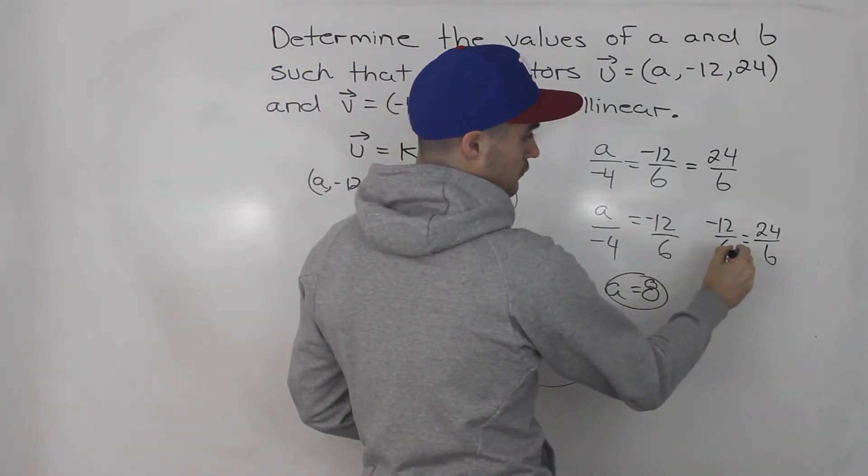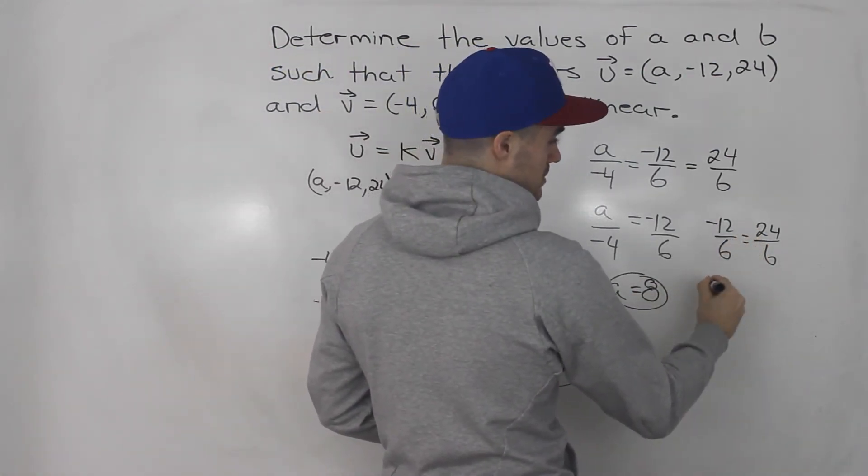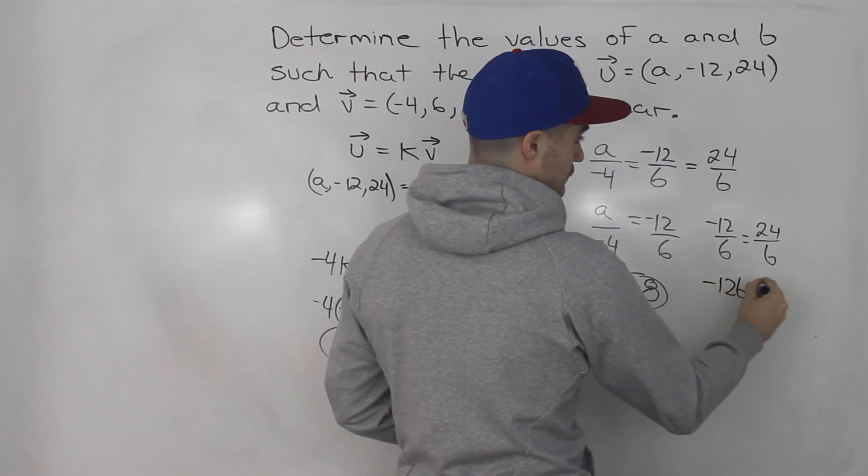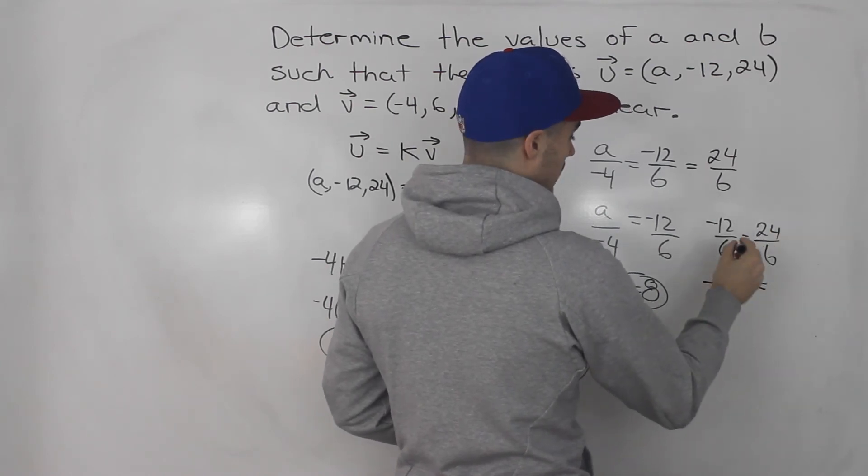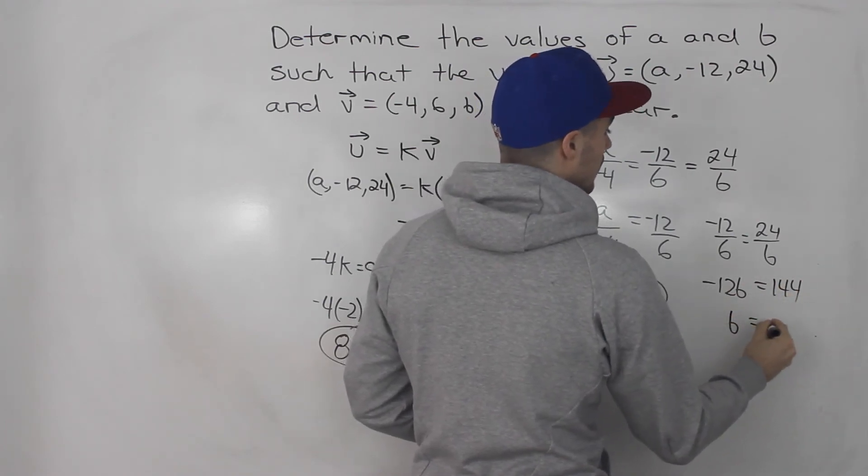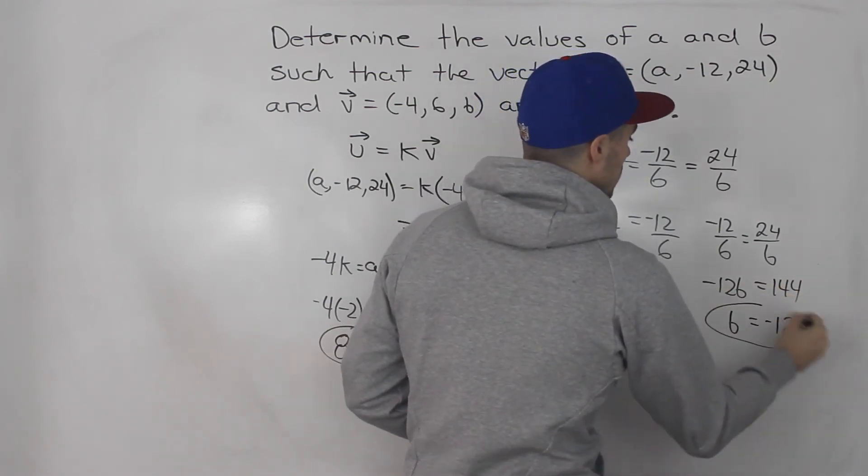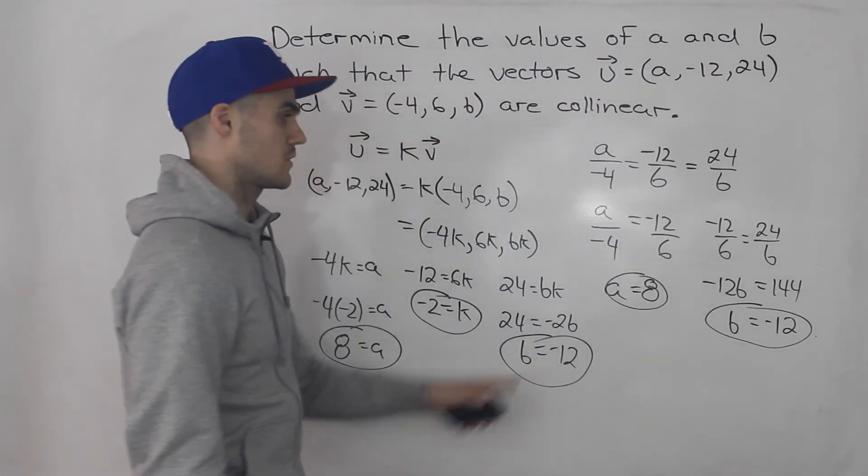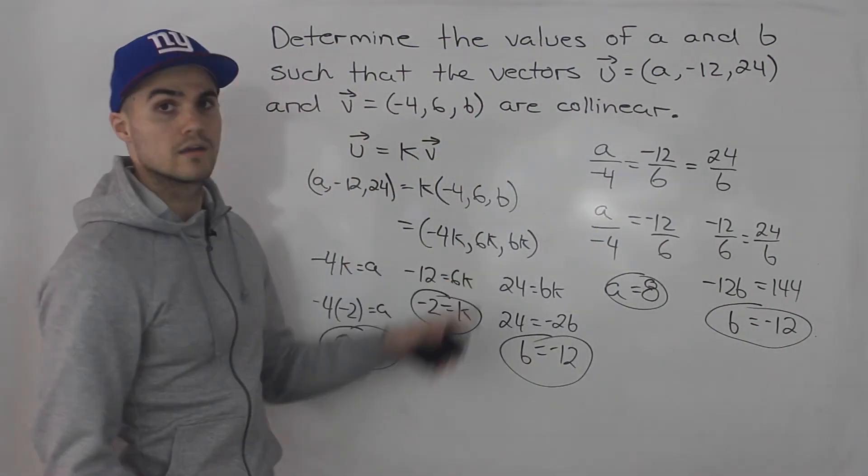And then over here, you'd have -12B equals, what is that, 6 times 24 rather, is 144. Divide both sides by -12, that would give you -12, which is what we got here. So either way works.